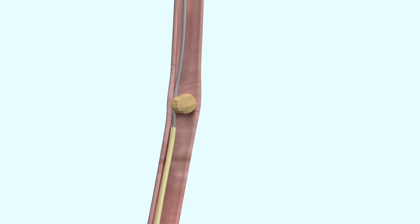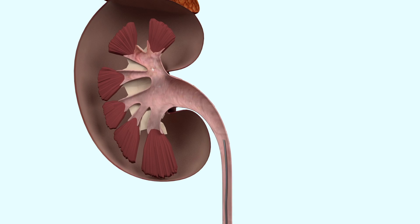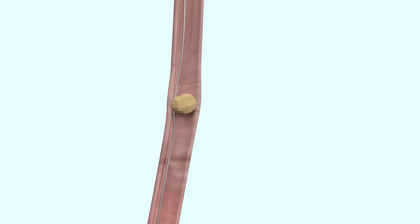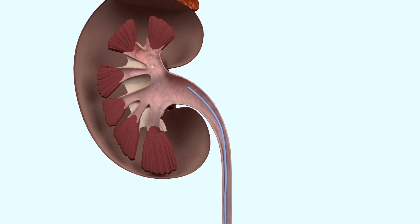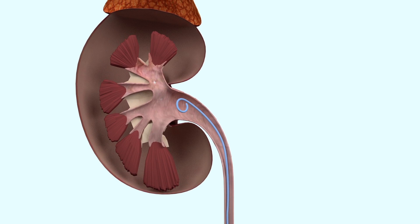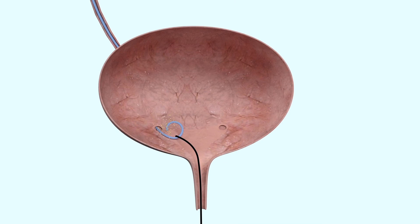A slippery guide wire is then inserted through the catheter, bypassing the obstruction and then goes into the kidney. A double J stent is then passed over the wire and into the kidney, bypassing the obstruction. Definitive treatment will be required at a later stage to treat the underlying cause of the blockage, in this case a stone.